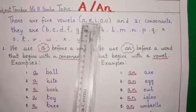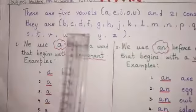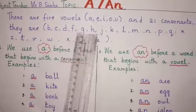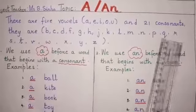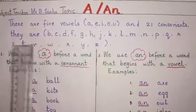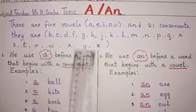There are five vowels: A, E, I, O, U, and 21 consonants. They are B, C, D, F, G, H, J, K, L, M, N, P, Q, R, S, T, V, W, X, Y, Z.